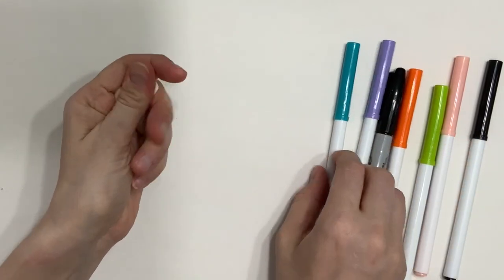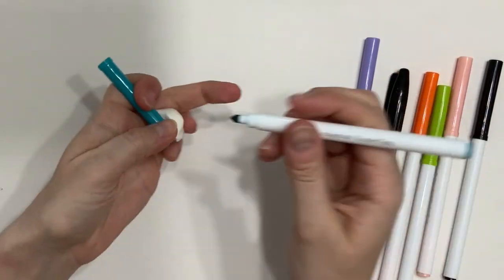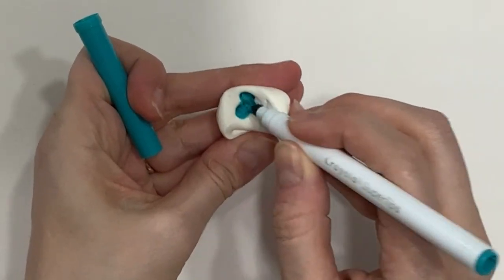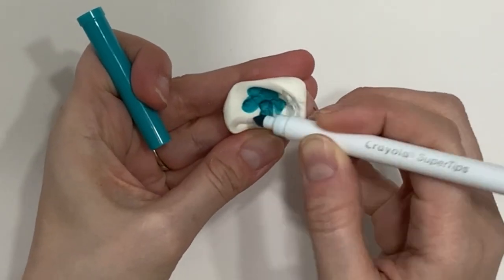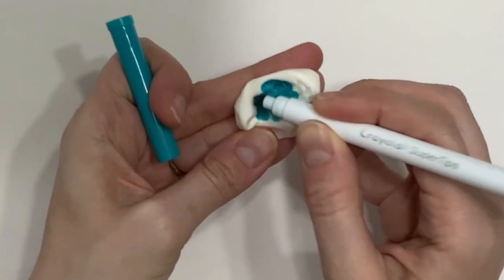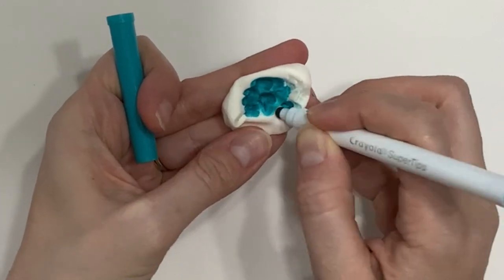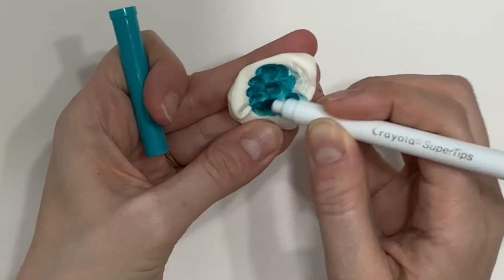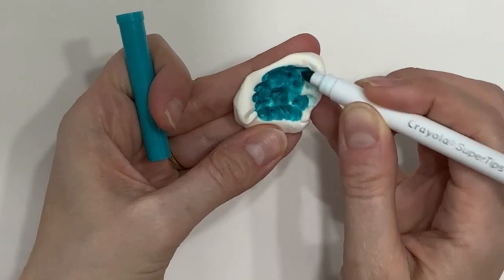Now let's talk about ways that we can add color. One of the ways is by using marker. Take the marker tip and add lots of color to your Model Magic. The more color you add, the richer and more colorful and darker the Model Magic will be.